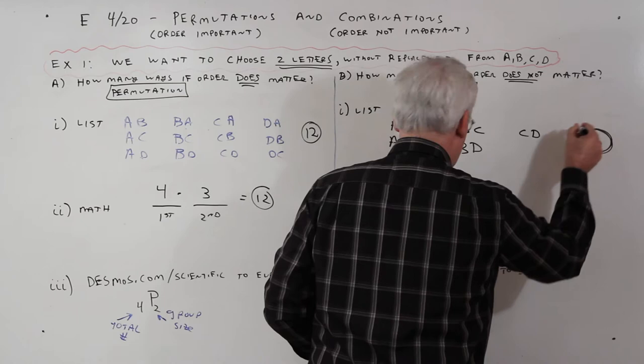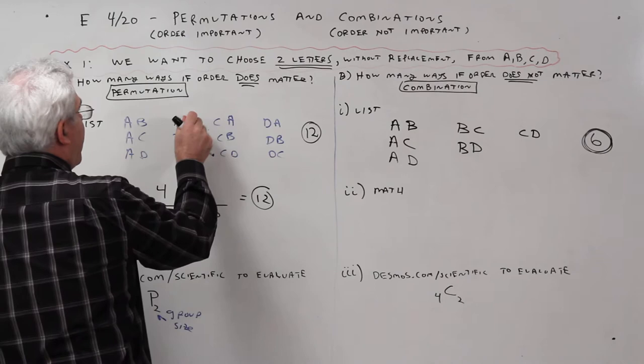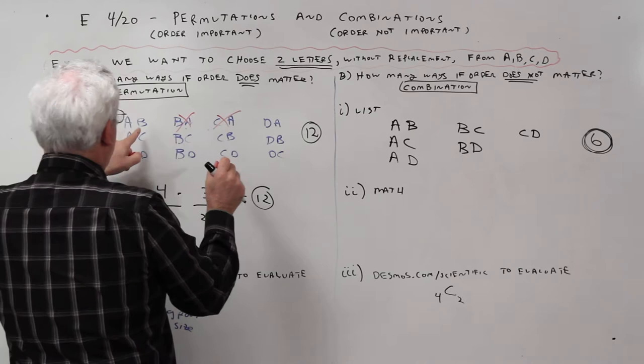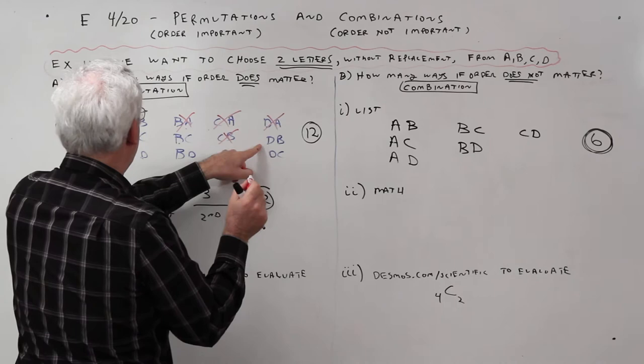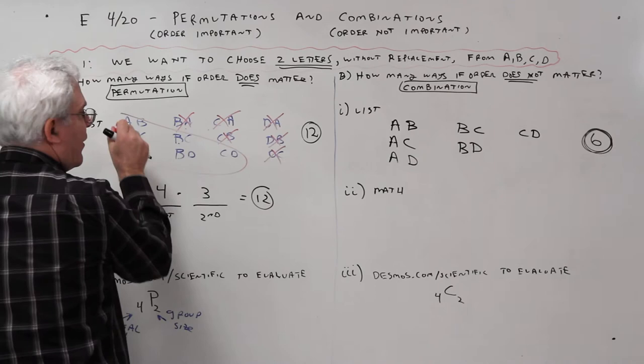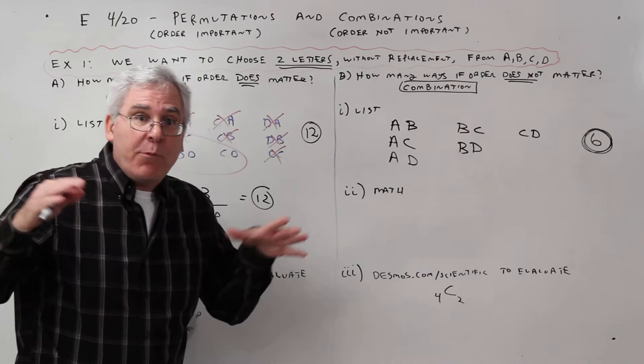And just to show you how that worked out. Essentially, over here, I got rid of B, A. It was the same. I got rid of C, A. It was the same. I got rid of C, B. It was the same. I got rid of D, A there. I got rid of D, B there. I got rid of D, C there. So, you can see that's how that list got generated.